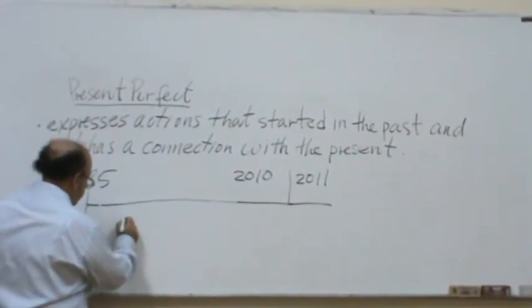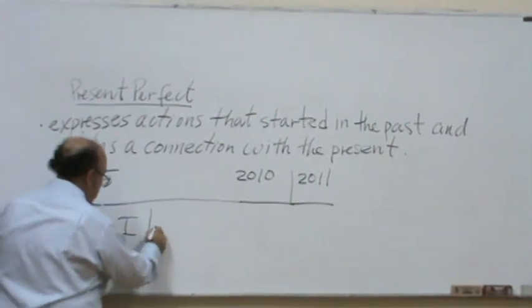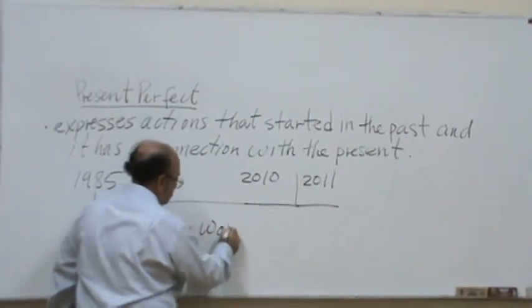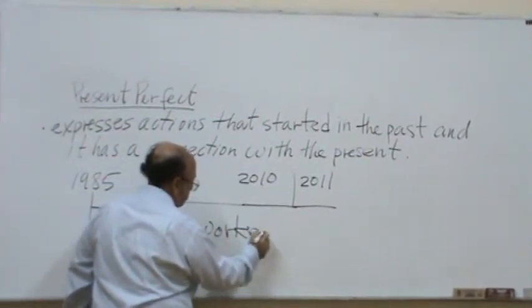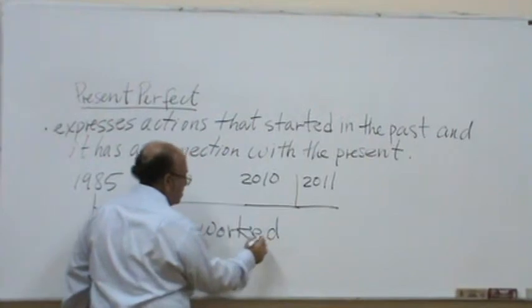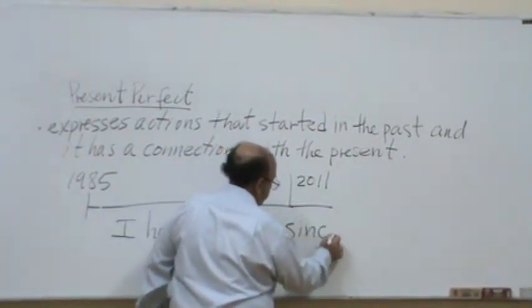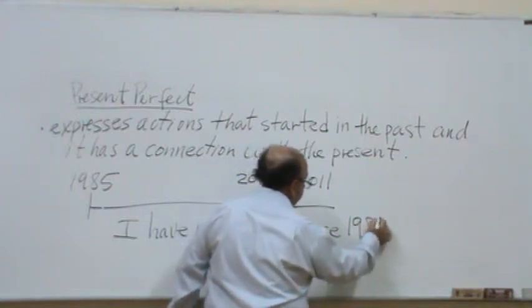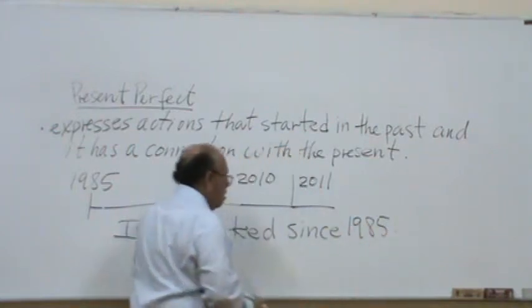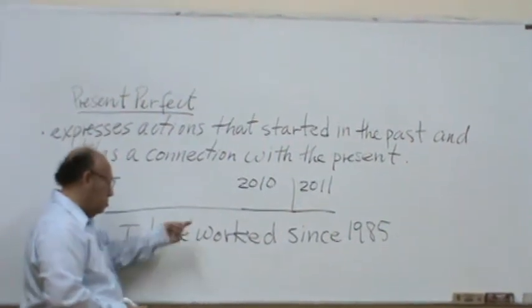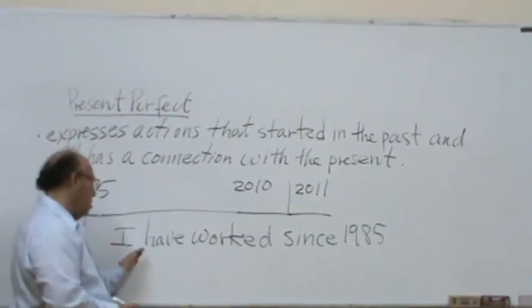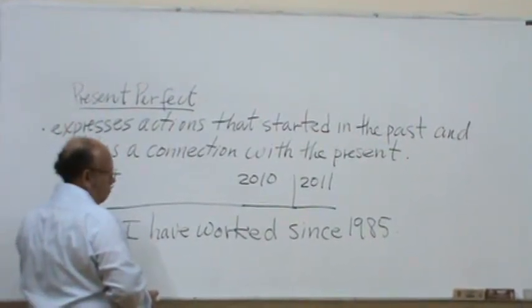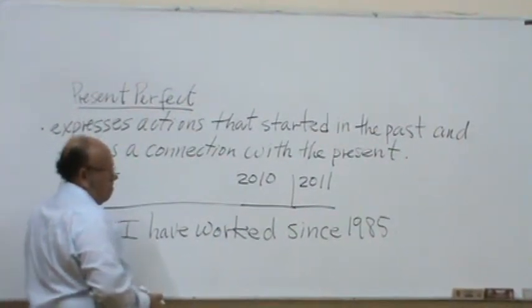Example. I have worked since 1985. When I say I have worked since 1985, it means that I started in 1985 and I'm still working.